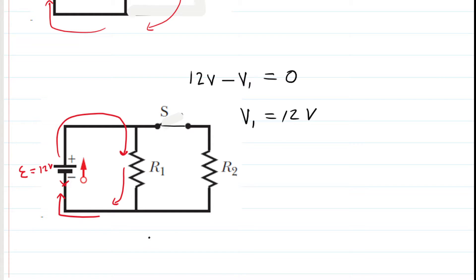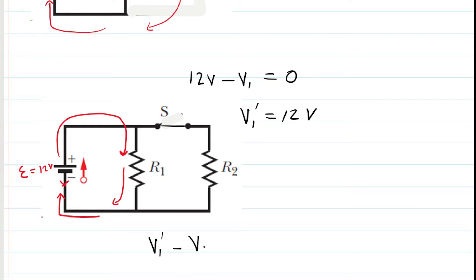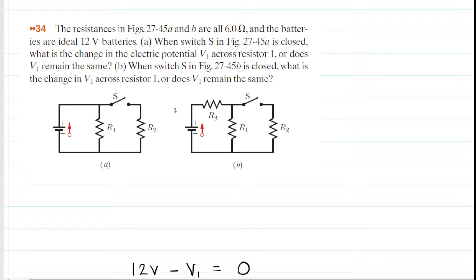So if we take V sub 1 final minus V sub 1 initial, we get 12 minus 12, which equals zero. There is no change — V sub 1 remains the same. Part A is solved: there is no change in V sub 1.